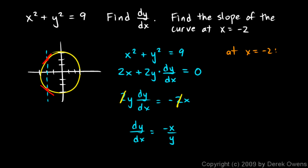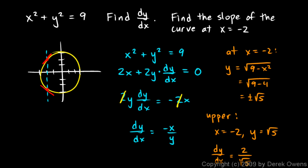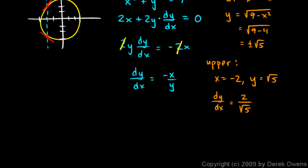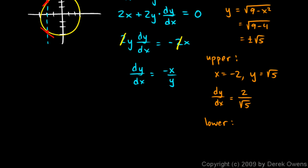I'm going to take the original equation and solve it for y now. y equals the square root of 9 minus x squared. And so at x equals negative 2, we get the square root of 9 minus 4 or the square root of 5. And it's really plus or minus the square root of 5. So that's what we put in for y. So there's going to be two answers, the upper and the lower. Let's look at the upper part. The upper x is negative 2 and y is the positive square root of 5.